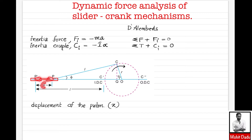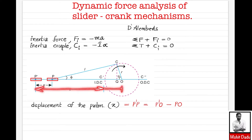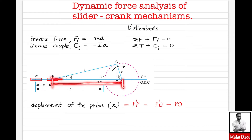The displacement of the piston is x, from P' to P. This can be calculated as the distance P'O minus the distance PO. P'O equals the length of the connecting rod l plus the crank length r. The distance PO equals PQ plus QO, where Q is the projected point from the crank pin C to the horizontal line.